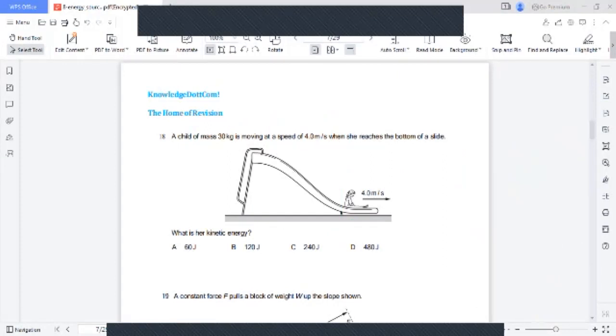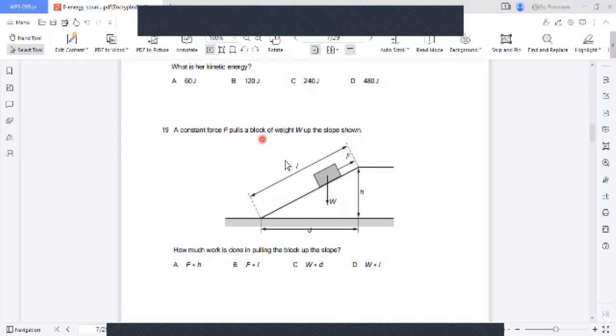A constant force F pulls a block. This is a constant force and it's a block which is pulled by this force W up the slope. How much work is done in pulling the block up the slope?